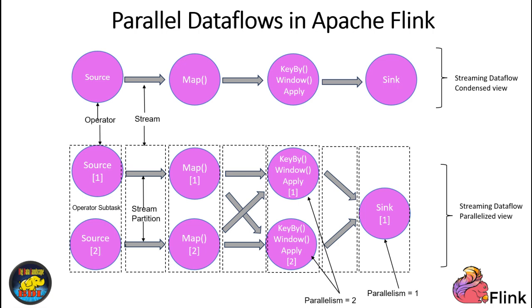On the other hand, redistributing streams change data partitioning, allowing for various transformations. However, ordering is preserved only within specific subtask pairs. In conclusion, Apache Flink's parallel data flow model optimizes stream processing, enhances performance, and supports diverse data flow patterns within Flink programs. It's a powerful tool for efficient and high-performance stream processing.